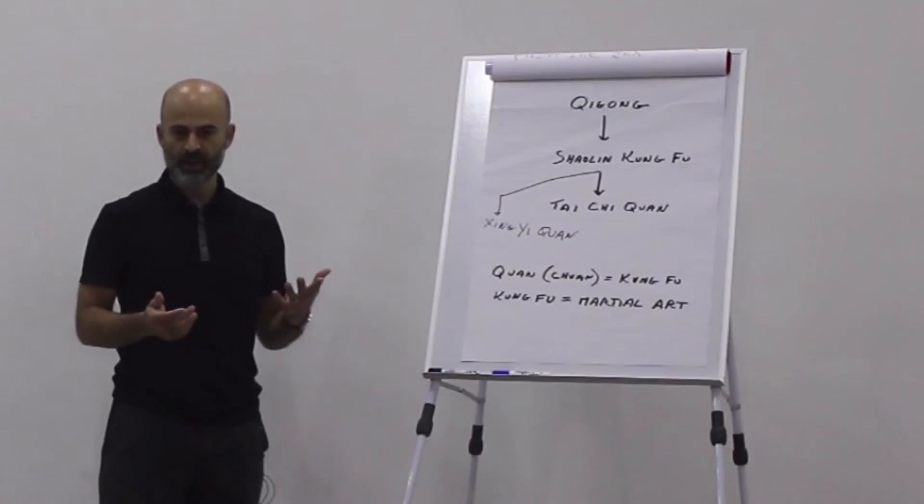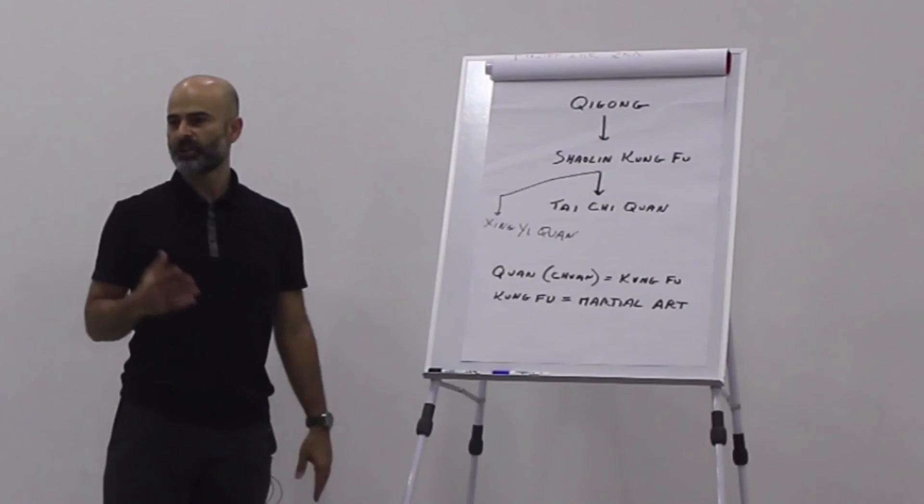So Tai Chi, for example, has the sword. There's lots of weapons in Tai Chi and Shaolin Kung Fu. Obviously you can't start learning, or it's not so great to start learning the sword until you have some of the basics of Tai Chi.